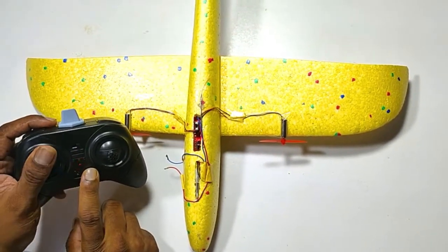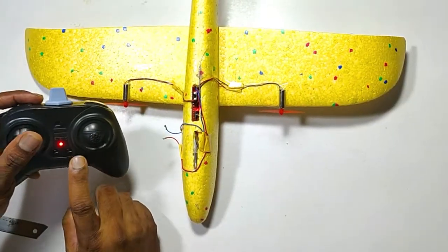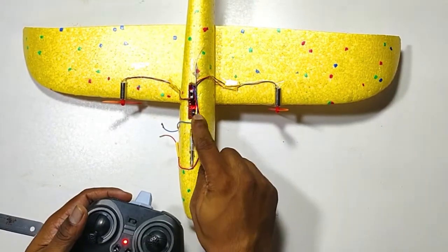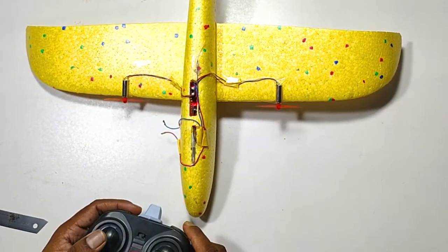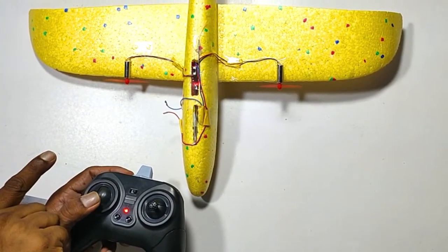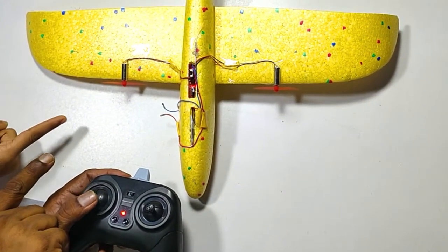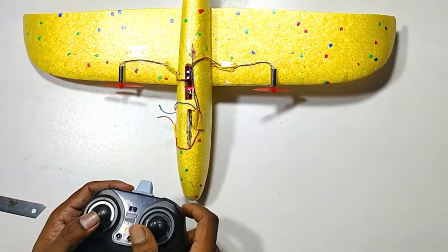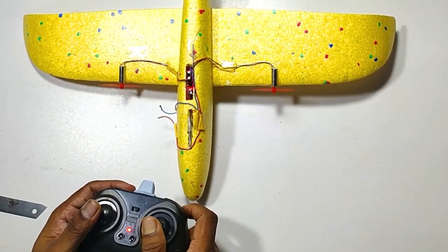So for connecting that we have to just pull the throttle up so automatically it will get connected and this red light stops blinking. You can see the right now the throttle and left right it's working right now.